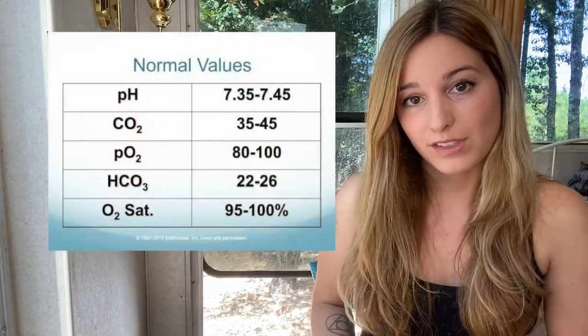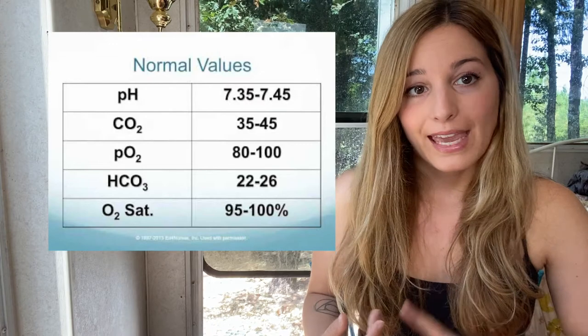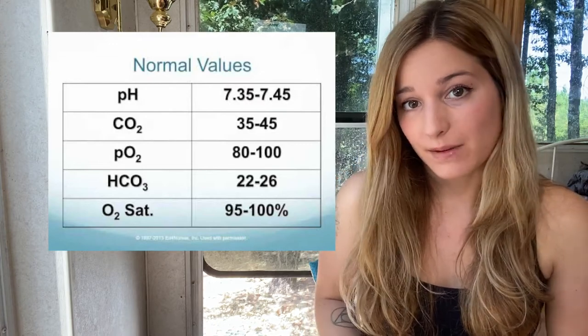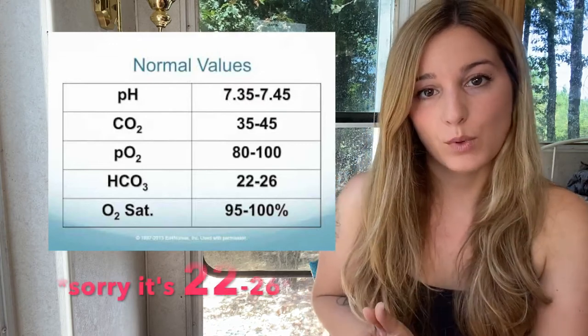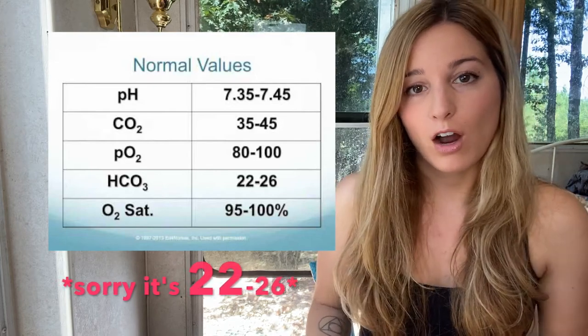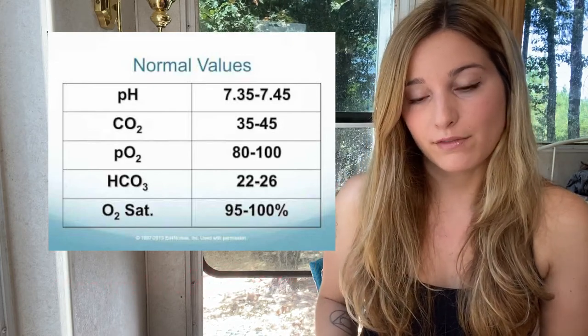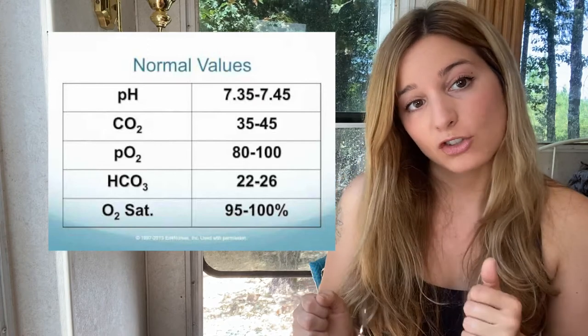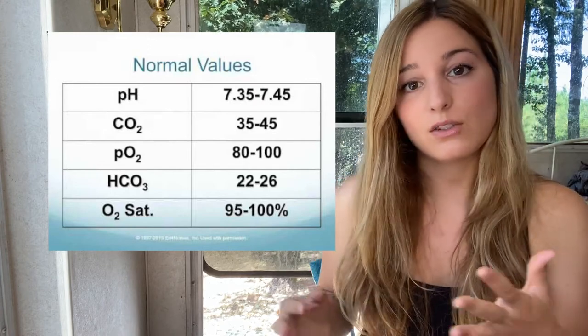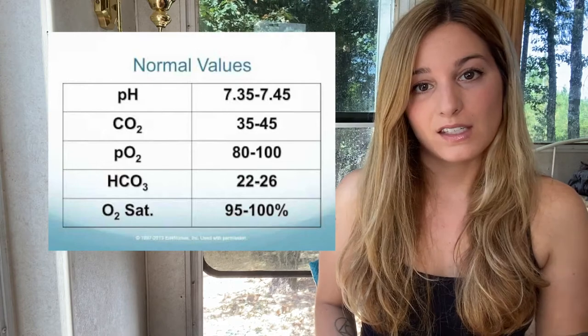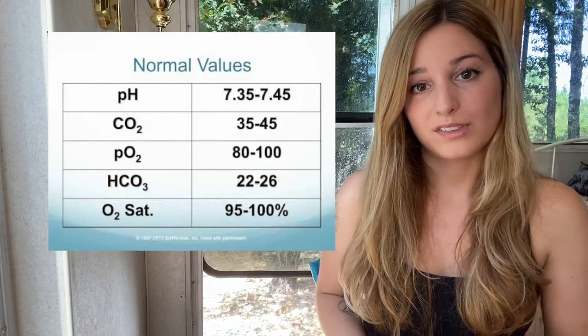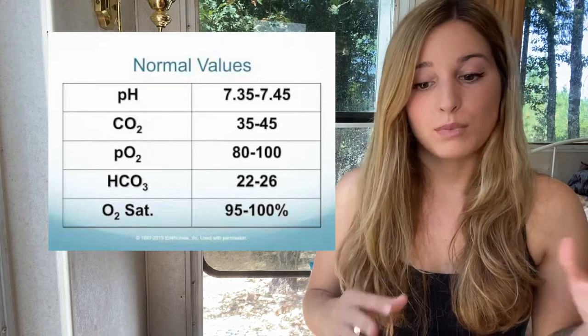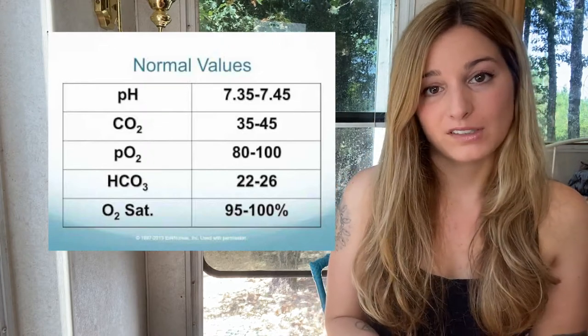Let's go over what we need to stay within range. pH: 7.35 to 7.45. HCO₃ or bicarbonate: 24 to 26. CO₂ or carbon dioxide: 35 to 45. Partial oxygen PaO₂: 80 to 100. And SaO₂, oxygen saturation, should be over 95 percent.